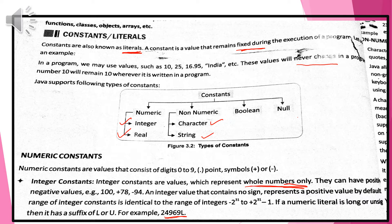What is the integer constant? Integers are the values which represent whole numbers only — no fraction, no decimal, nothing. Only the integer value, the whole number. They can have a positive or negative value. A number containing no sign represents a positive value by default. For example, P equals 78 means positive 78.